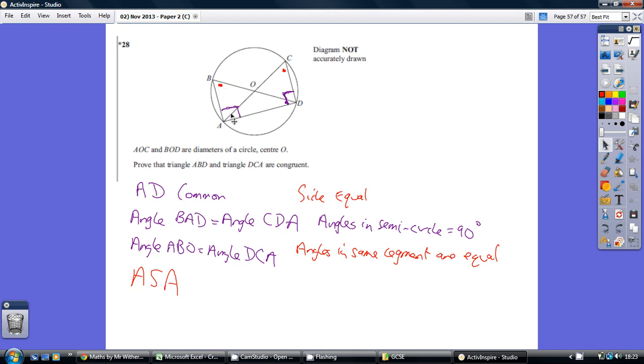Two angles are the same in each triangle and a length is common, and therefore we can conclude that the triangles are congruent by the angle-side-angle rule.